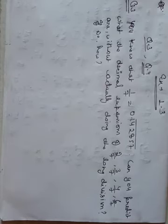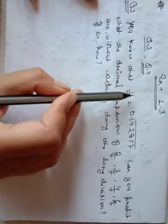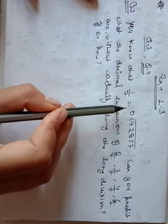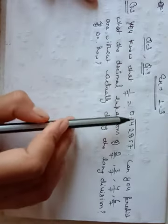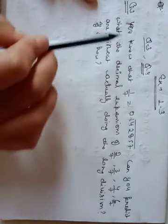Welcome to my YouTube channel Dharma Education. Today we will do Exercise 1.3, question number 3 and question number 4. Question number 3 says: you know that 1 upon 7 is equal to a given decimal expansion. Can you predict...